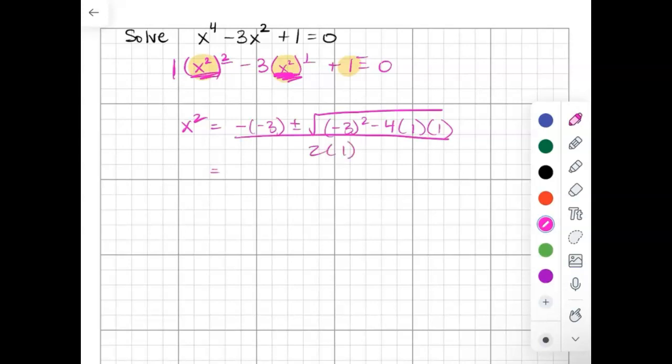We're going to solve that. Negative negative 3 is 3 plus or minus the square root. That would be 9 minus 4, all over 2. So we get 3 plus or minus the square root of 5 over 2.